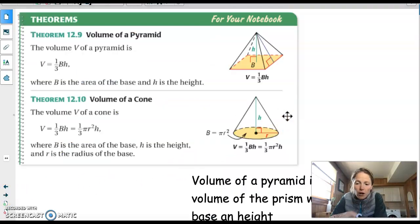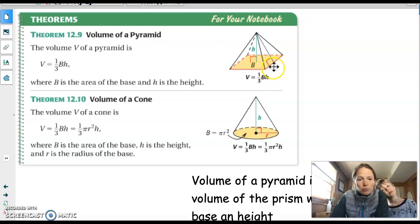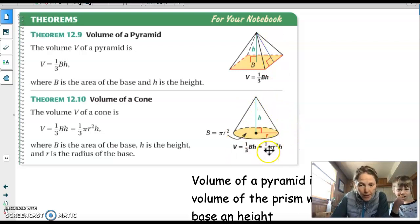So here are the two theorems that kind of go along with that. Again, these theorems look exactly like when we were finding the volumes of prisms and cylinders, except for now there's that one third in there because we're talking about pyramids and cones. So we're missing some of that volume.